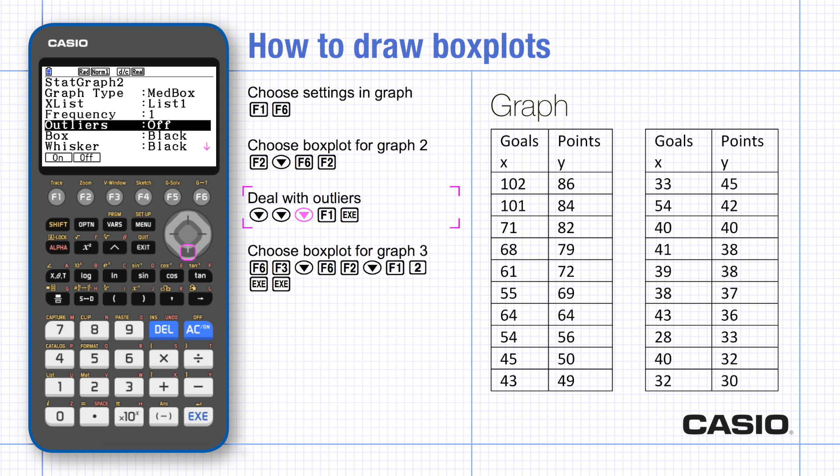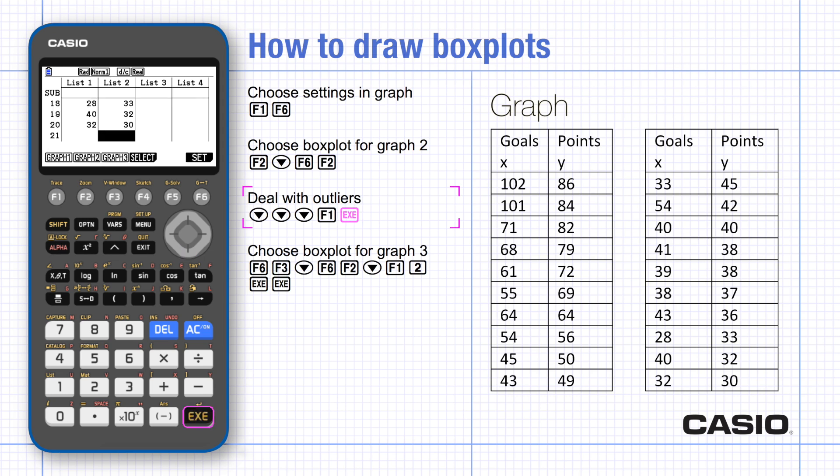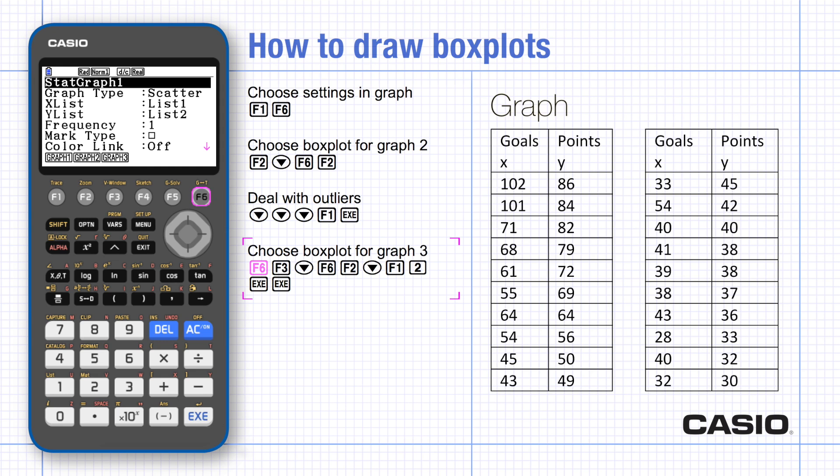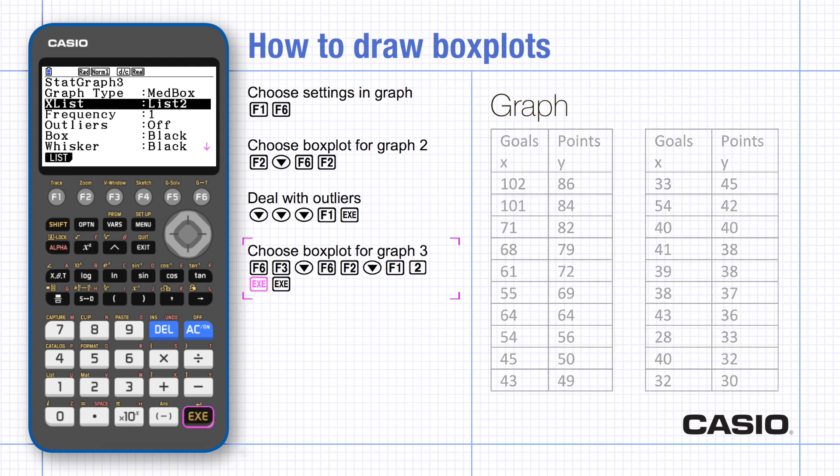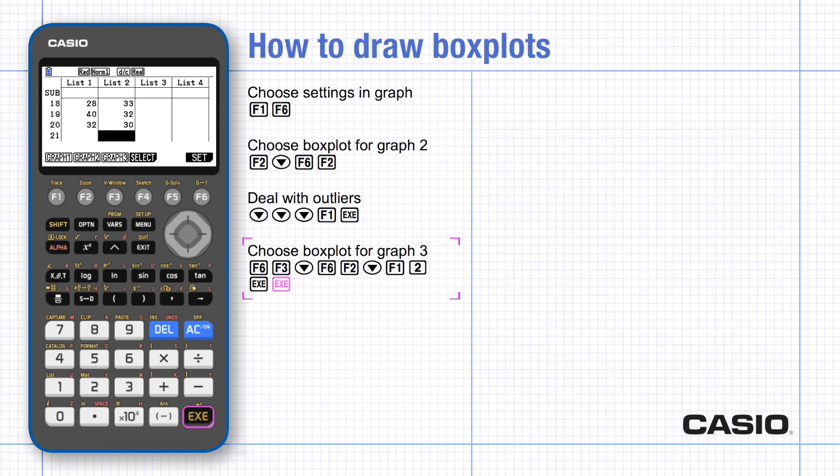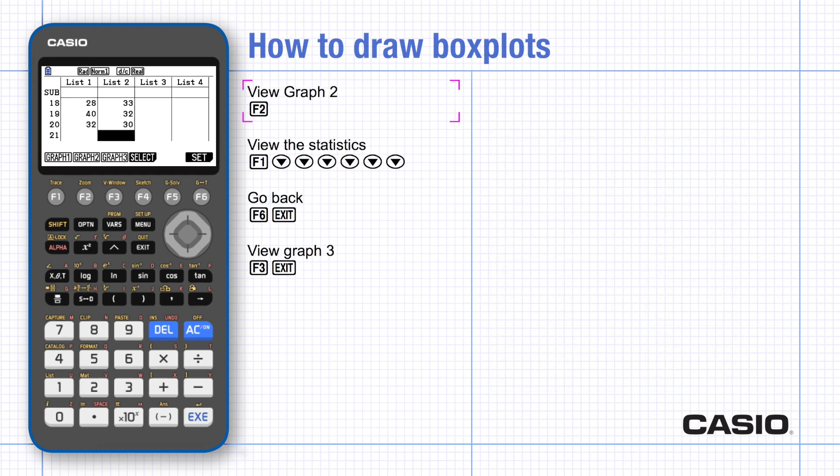Go back to set and choose graph three. Again, scroll down to the graph type as we did before and choose box plot from the second set of options. Select list and enter list two, then execute, and press execute again to enter these settings.